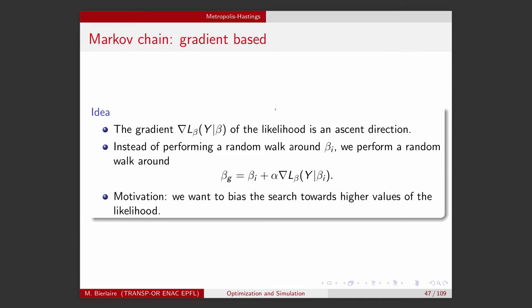In the context of the estimation of this model, the gradient of the likelihood function provides me with an ascent direction that is pointing towards values of beta which has a higher likelihood. This is actually what is exploited in optimization algorithms in order to solve the maximum likelihood estimation problem.